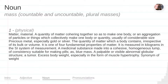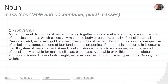Noun: matter, material — a quantity of matter cohering together so as to make one body, or an aggregation of particles or things which collectively make one body or quantity, usually of considerable size. Also refers to precious metal, especially gold or silver. The quantity of matter which a body contains, irrespective of its bulk or volume. It is one of four fundamental properties of matter.